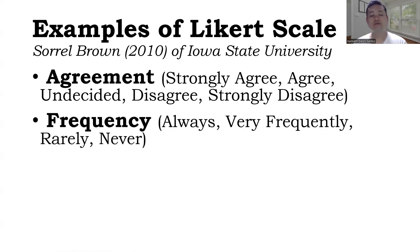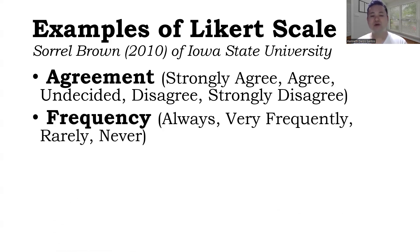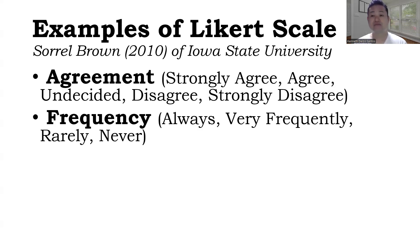We also have for frequency: always, very frequently, rarely, and never. You'll notice that this is only a 4-point Likert scale, compared to the agreement scale which has 5. But don't forget, these are just some examples. For frequency, you can also have a 5-point, 3-point, or 6-point Likert scale, depending on the need of the researcher.